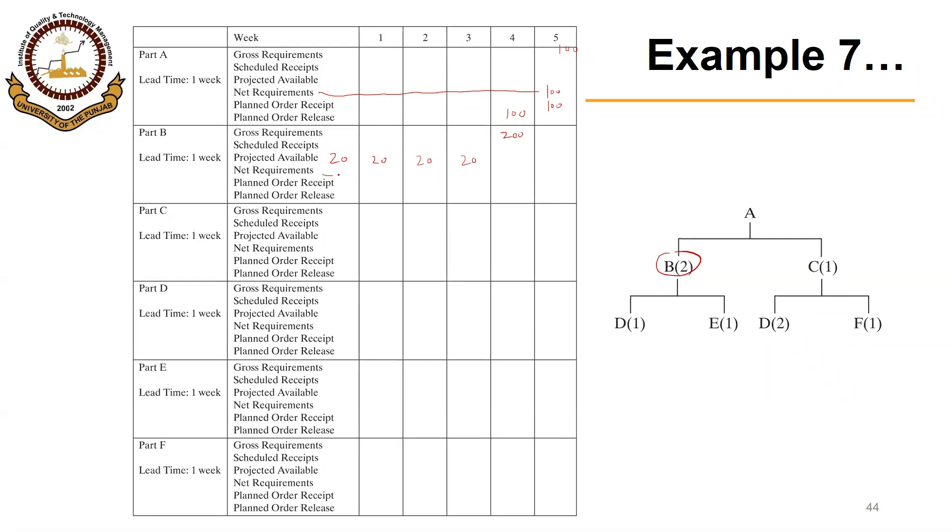So the net requirements in week 4 will become 200 minus 20, that is 180. Planned order receipt will be 180. So corresponding planned order release, based on lead time of 1 week, will be 180 in week 3.